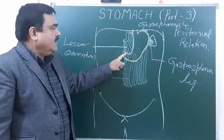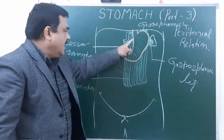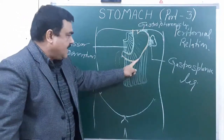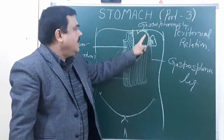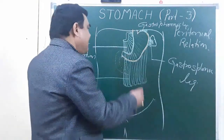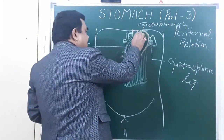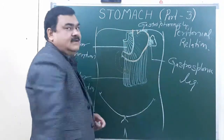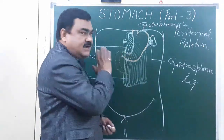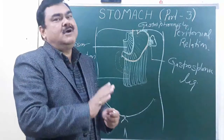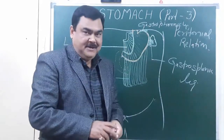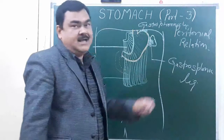So these are the peritoneal relations of the stomach: the lesser omentum is attached along the lesser curvature, the greater omentum along the greater curvature, the gastrosplenic ligament connects to the spleen, and the gastrophrenic ligament attaches at the fundus to the diaphragm. Posteriorly, a small area is uncovered — this is the bare area of the stomach. All other surfaces, both anterior and posterior, are completely covered by peritoneum.